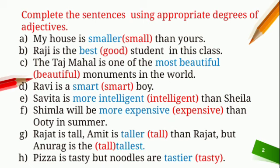Sentence 2: Raji is the dash good student in this class. Here, Raji is compared with the rest of the students of the class. So we will use superlative degree — good, better, best. And the answer is: Raji is the best student in this class.